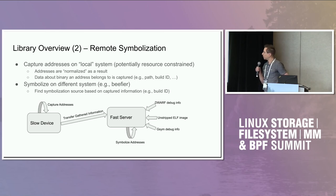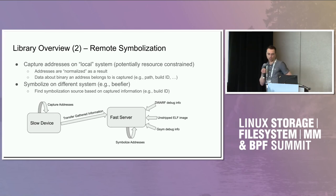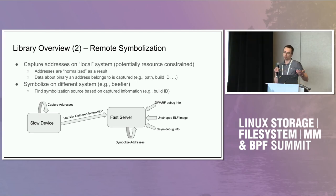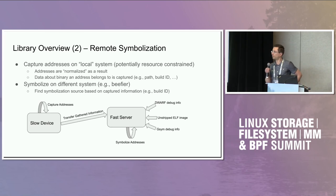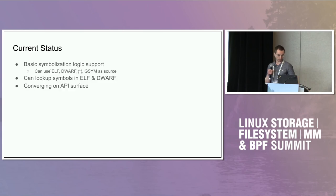This information would then be conveyed to the more powerful system — the fast server — that handles the actual symbolization. On that system you could have the actual DWARF data, which may not fit onto the small embedded device at all because it can be huge.